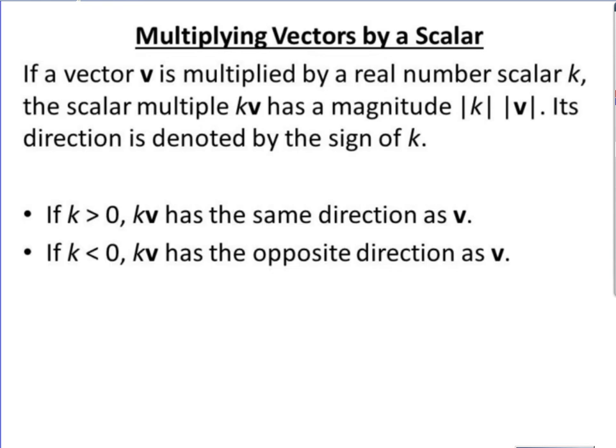Its direction is denoted by the sign of k. So if k is less than 0, if it's negative, it's going to go in the opposite direction. If it is a positive value, it's going to go in the same direction.